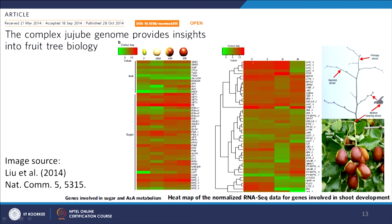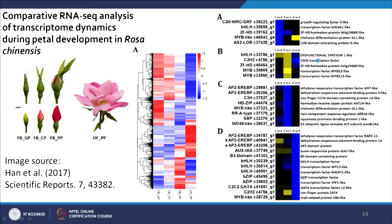Here you can see a heat map of RNA sequencing data which involves shoot development. They took different types of shoots — secondary shoots, primary shoots, and mother bearing shoots — extracted total RNA, and performed RNA sequencing to identify different tissue-specific genes. This is another example where comparative RNA sequencing analysis was done for transcriptome dynamics during petal development in rose. Different stages of petals from different developmental stages were taken, RNA sequencing was performed, and different genome expression patterns were identified — including different types of transcription factors which are differentially expressed.